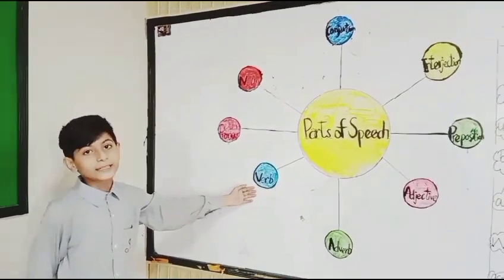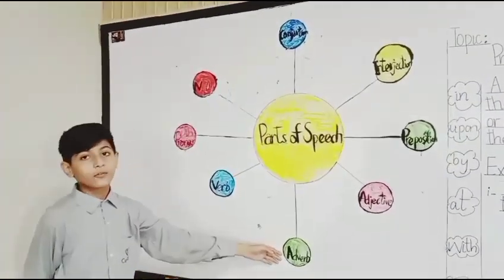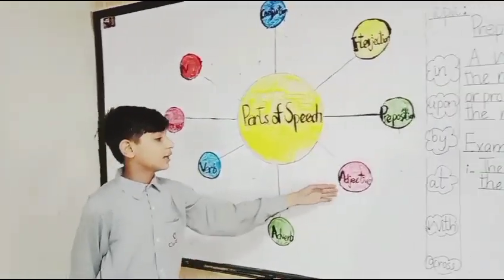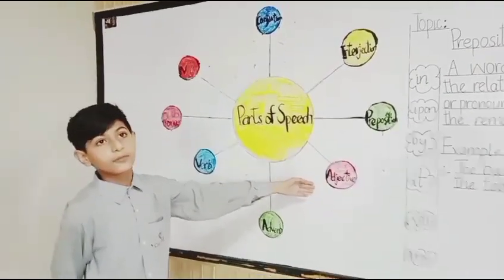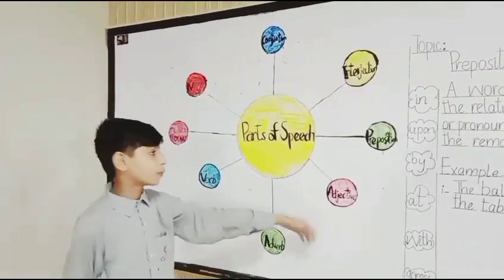Verb - a word that indicates an action. Adverb qualifies a word. Adjective is a word which is used to qualify a noun or pronoun.